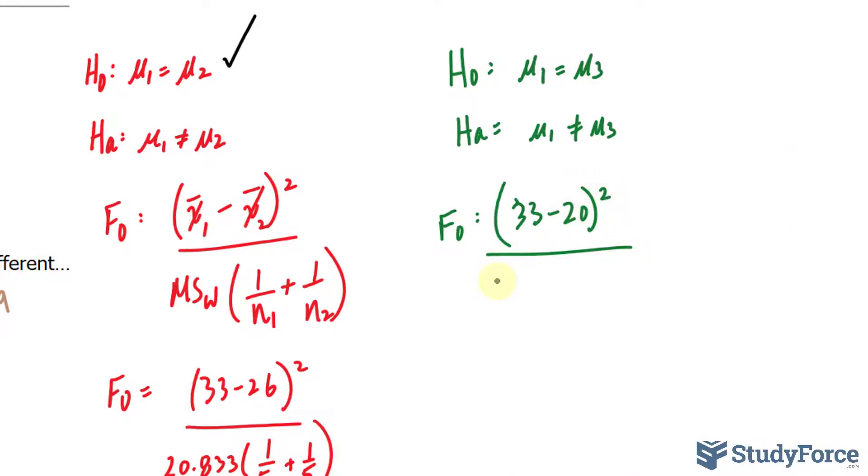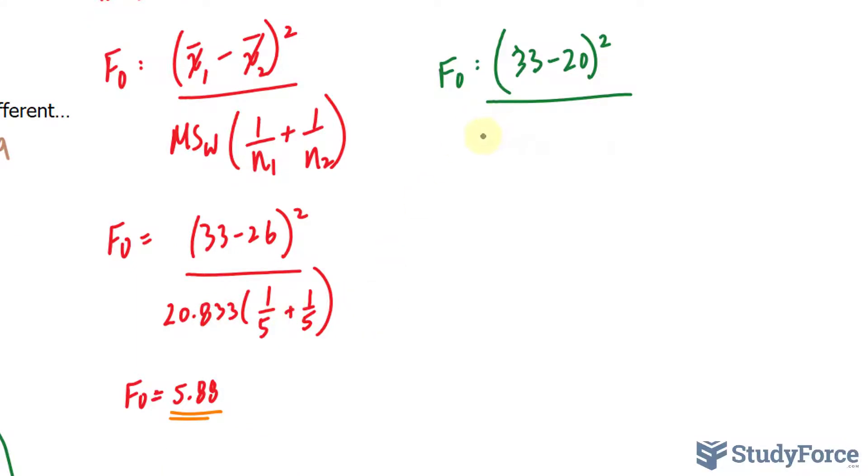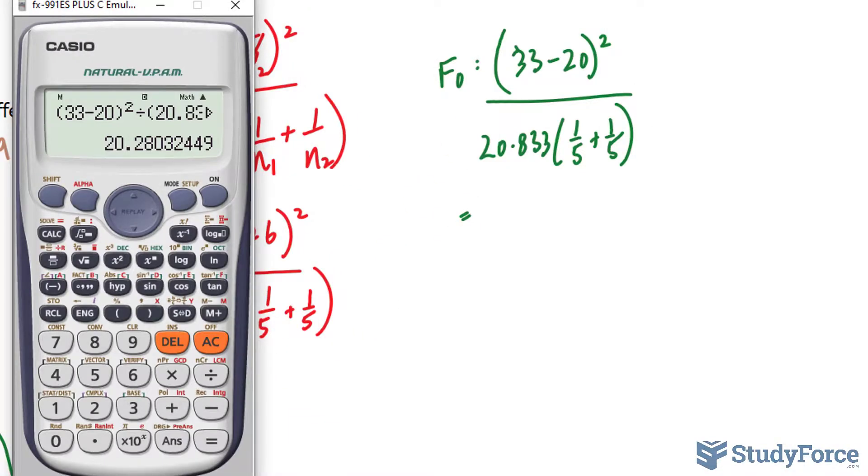over the same denominator as before. Let's use our calculator. We end up with an F observed that's much larger this time, 20.28.